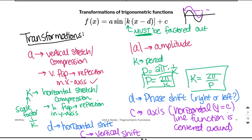The period in radians is 2π/k, but the period in degrees is 360°/k. It's important to know both because we will be going back and forth between radians and degrees — they are interchangeable.